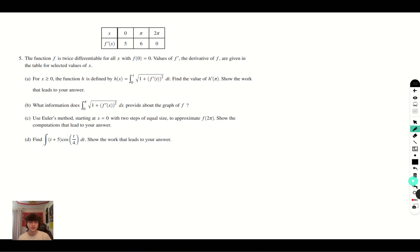Now let's go to part c. Using Euler's method, start at x = 0 with two steps of equal size to approximate f(2π). Show the computations that led to your answer. Alright, so Euler's method just states that in order to find f(x), you have to do f'(x) times dx.